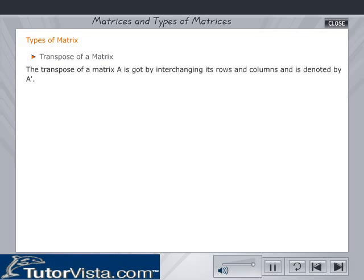Now let's learn about the transpose of a matrix. A transpose of a matrix A is got by interchanging its rows and columns and is denoted by A dash.